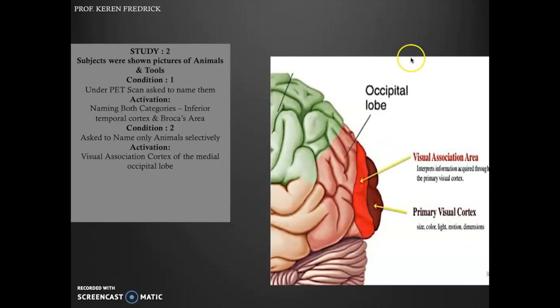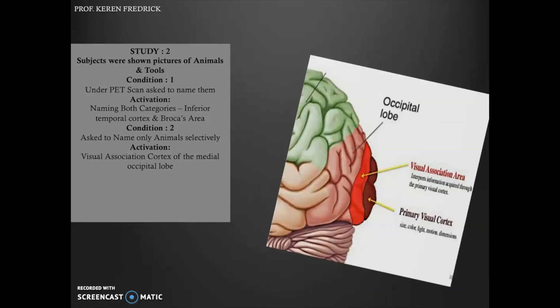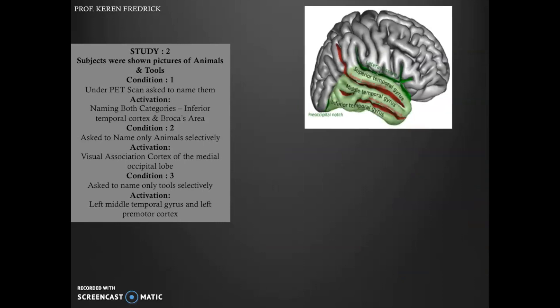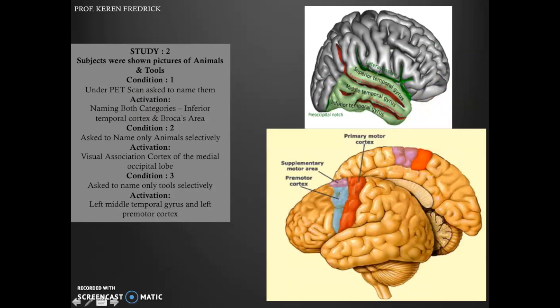In condition two, they were asked to name only animals selectively. Activation during this was only in the visual association area in the medial occipital lobe. In condition three, they were asked to name only tools selectively, and the activation centered around the middle temporal gyrus of the temporal region as well as the premotor cortex that you can see out here.